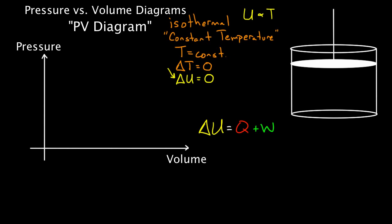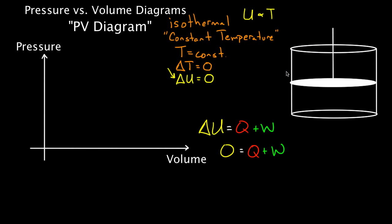For an isothermal process, delta U is zero, which means Q plus W have to add up to zero. So if you do 300 joules of work by pushing the piston down, the only way the temperature remains constant is for 300 joules of heat to leave the gas — Q equals negative 300 joules — so that 300 and negative 300 add up to zero.